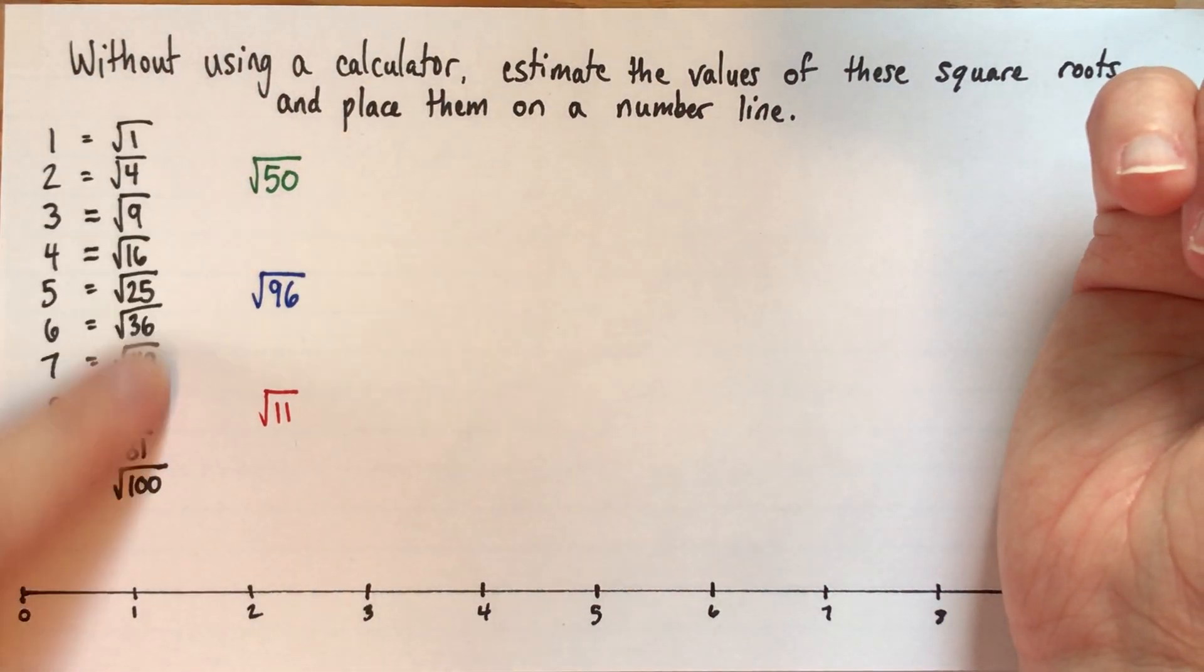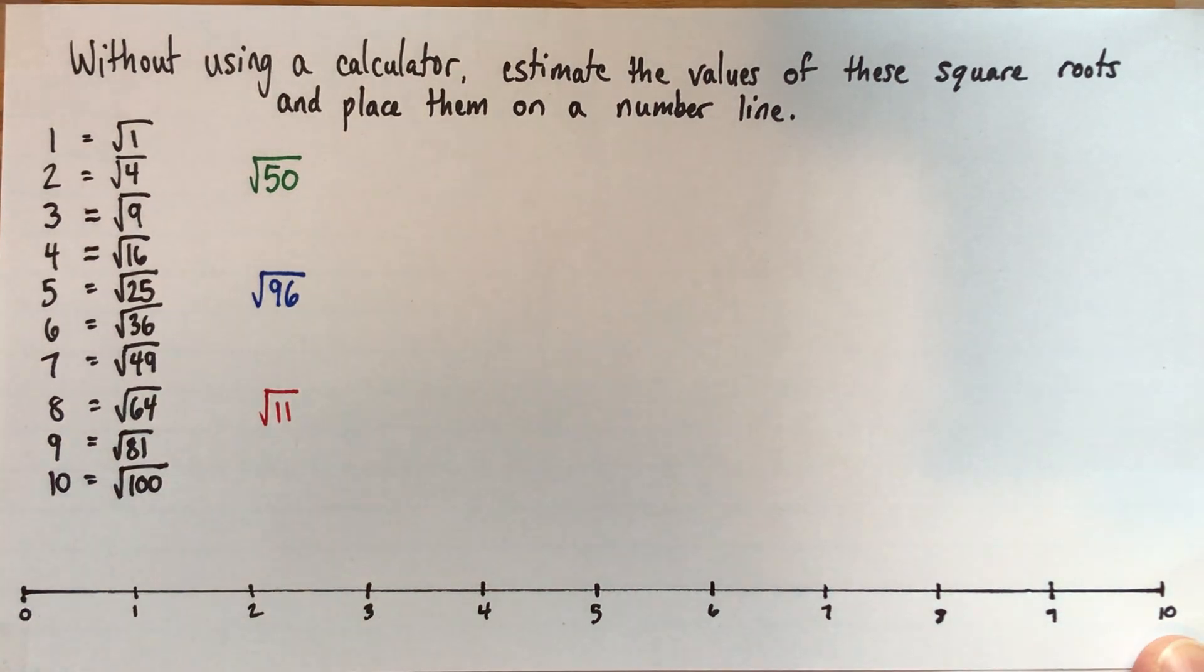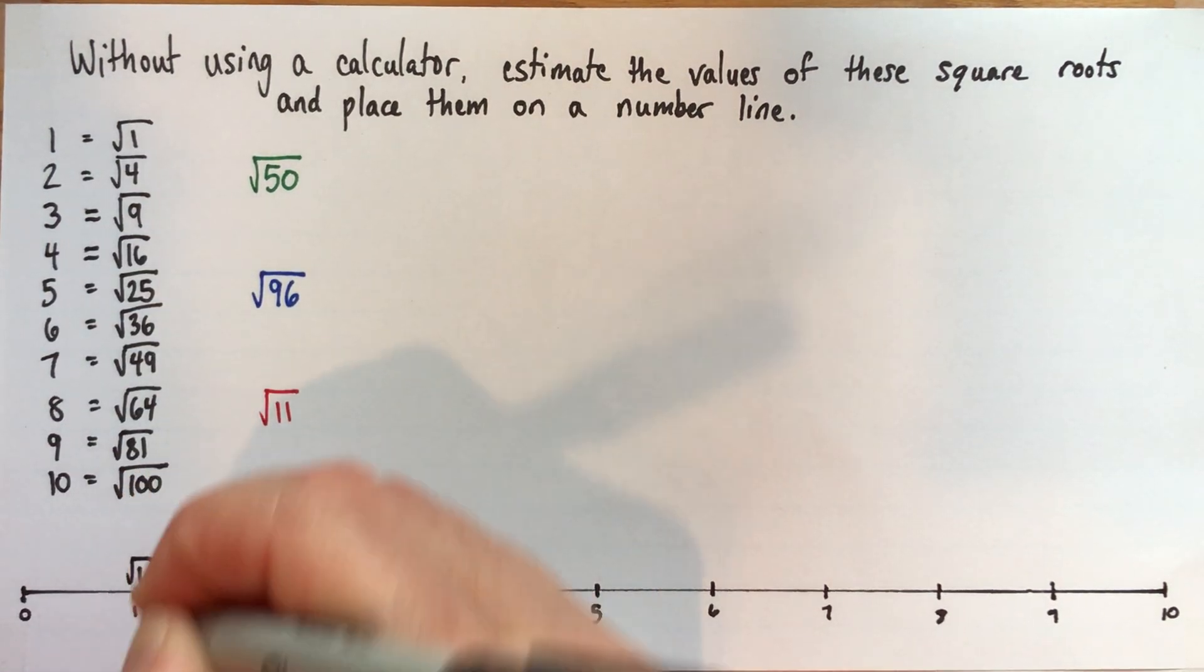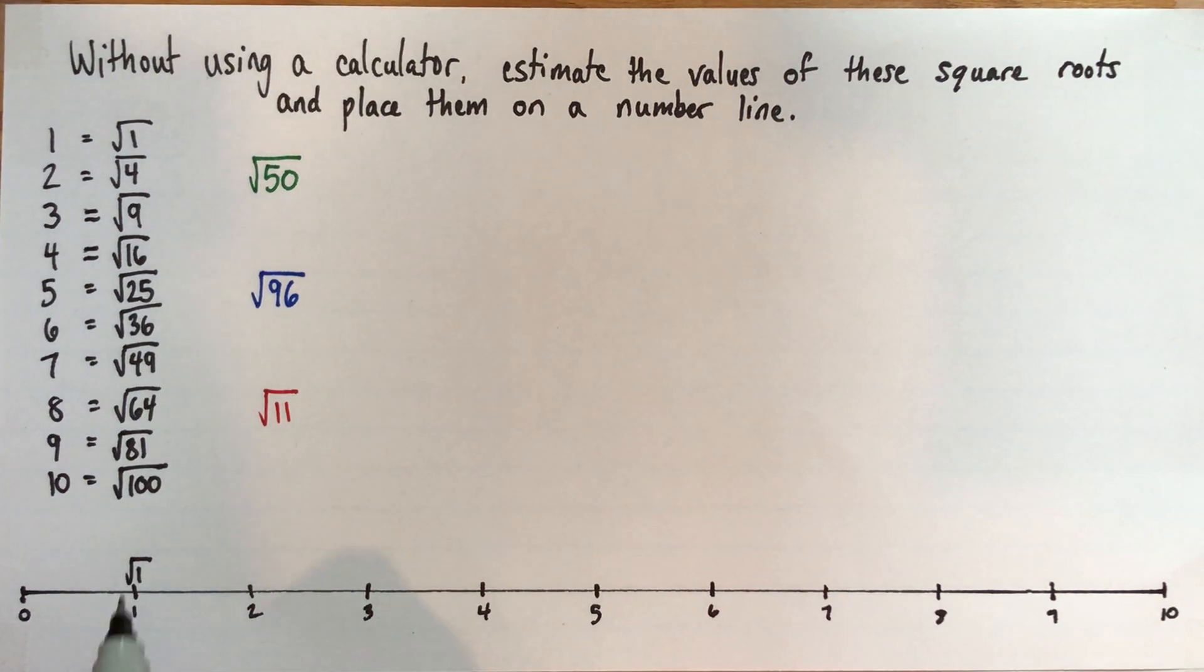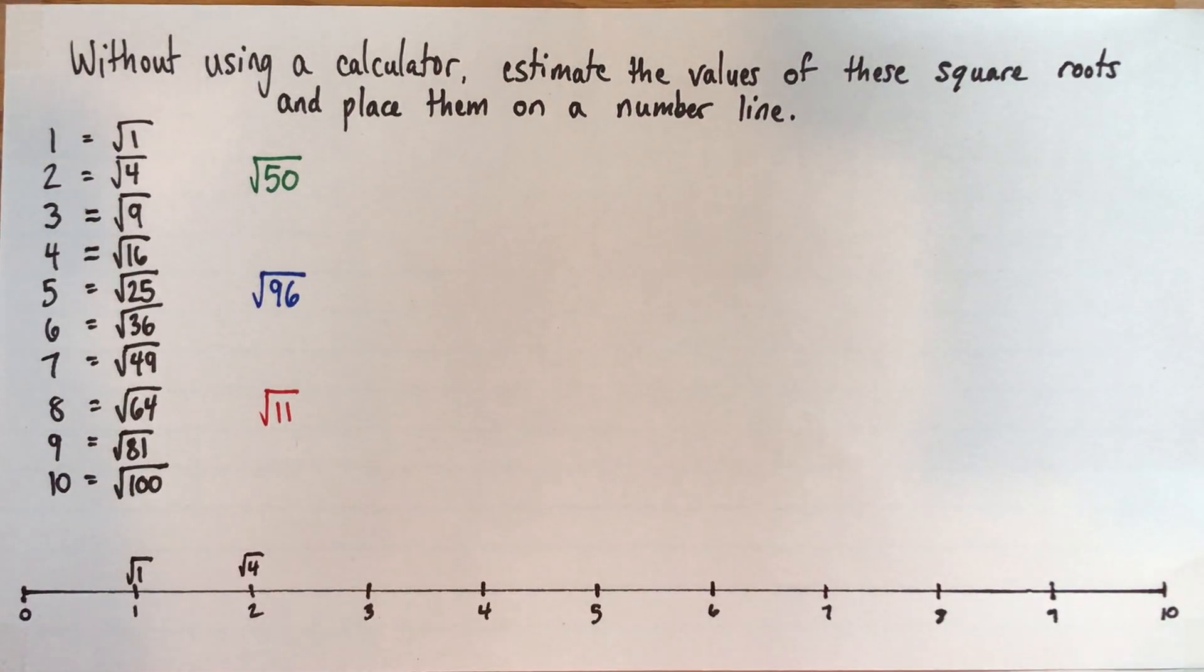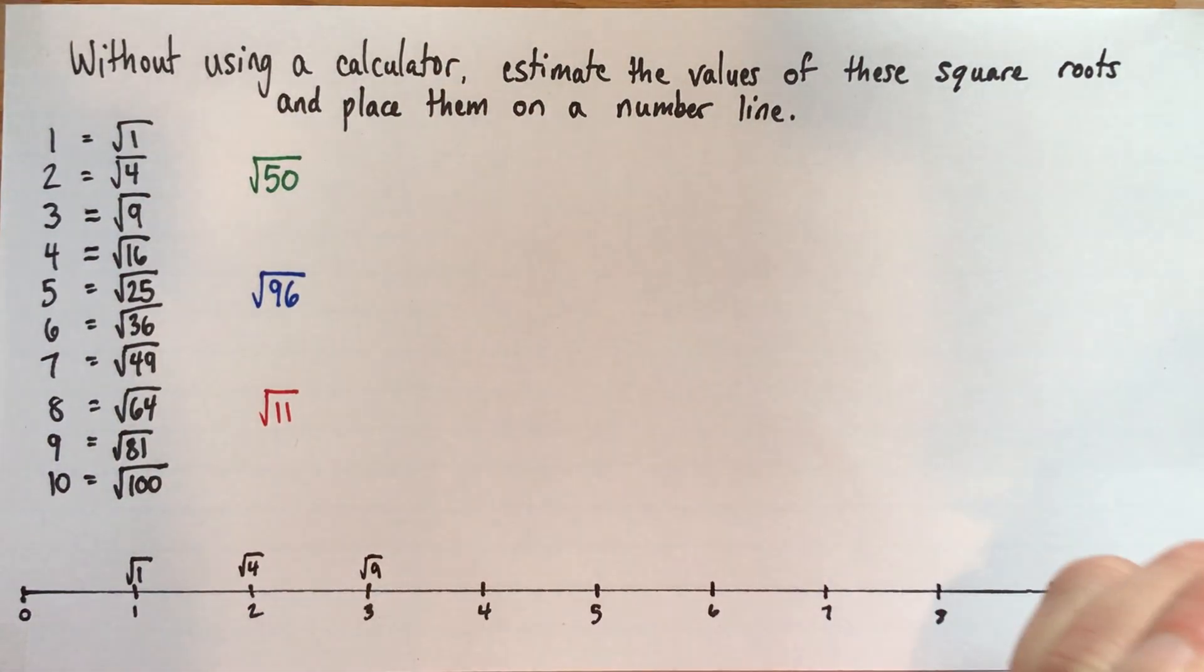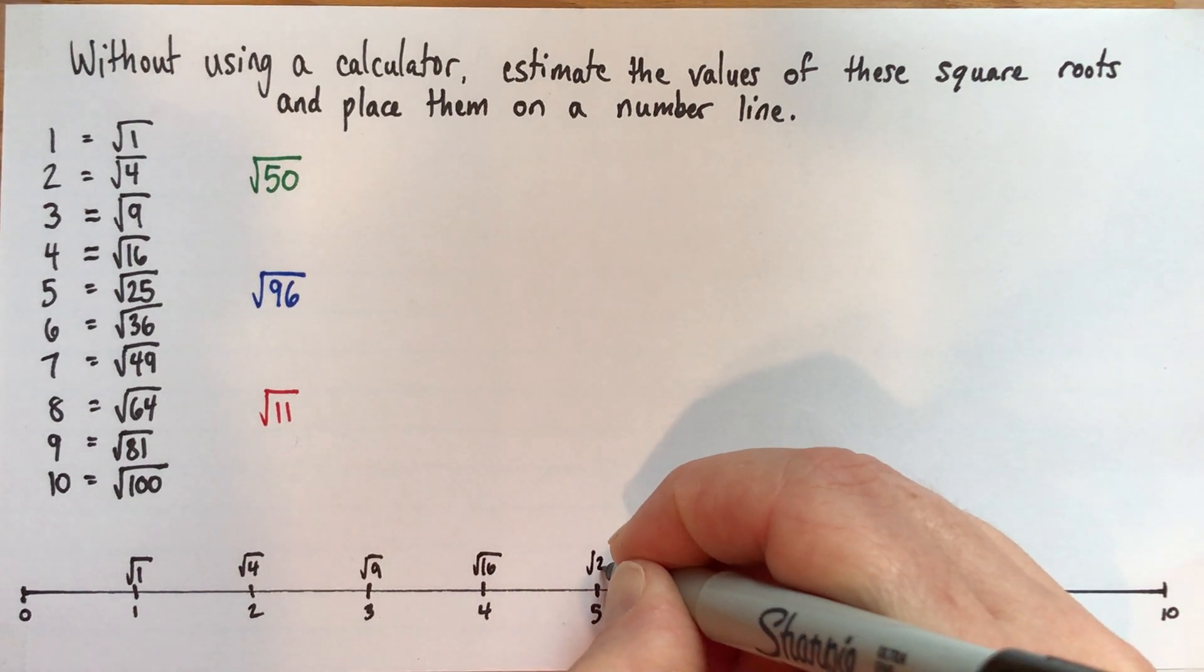And actually what we're going to do is we're also going to place these on our number line. And I've already drawn a number line that goes from 0 to 10. But another way of saying the number 1 is to say root 1. So over top of my spot for 1, I'm also going to write root 1. So this is just another name for the same number. And over top of 2, I'm going to write root 4, square root of 4. And over top of 3, I'll write square root of 9, and so on. So I'm just giving each number two different names.